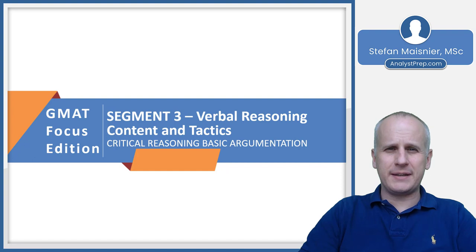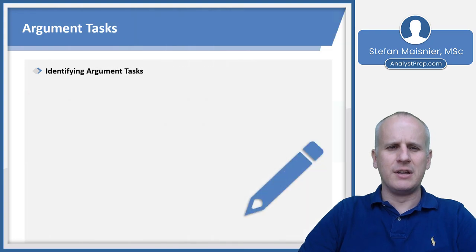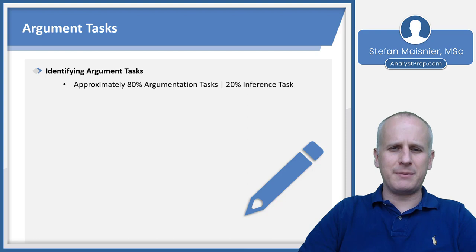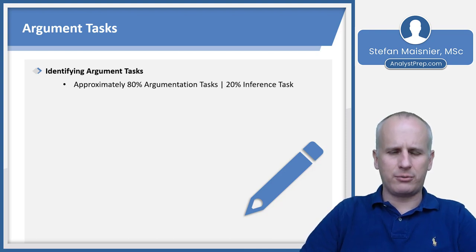In this lesson, we'll be taking a look at the basics of argumentation that you'll be able to apply for about 80% of the critical reasoning style questions you'll encounter in the verbal reasoning section of the GMAT Focus Edition. First, let's talk about identifying our argument tasks. Approximately 80% of your tasks within the critical reasoning format questions are going to be argumentation, and only about 20% are going to be inference style.